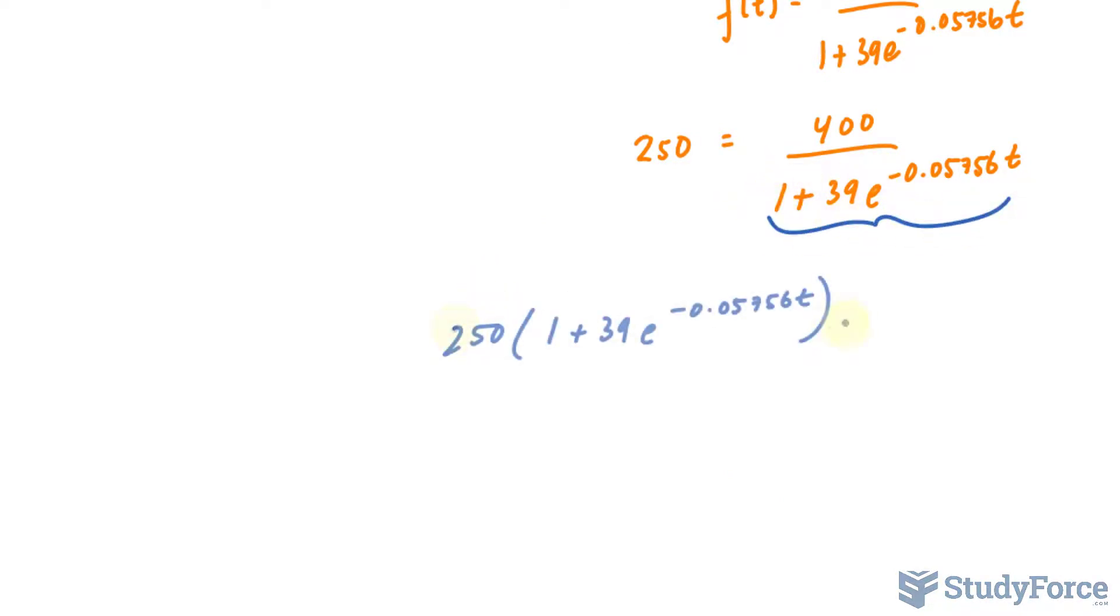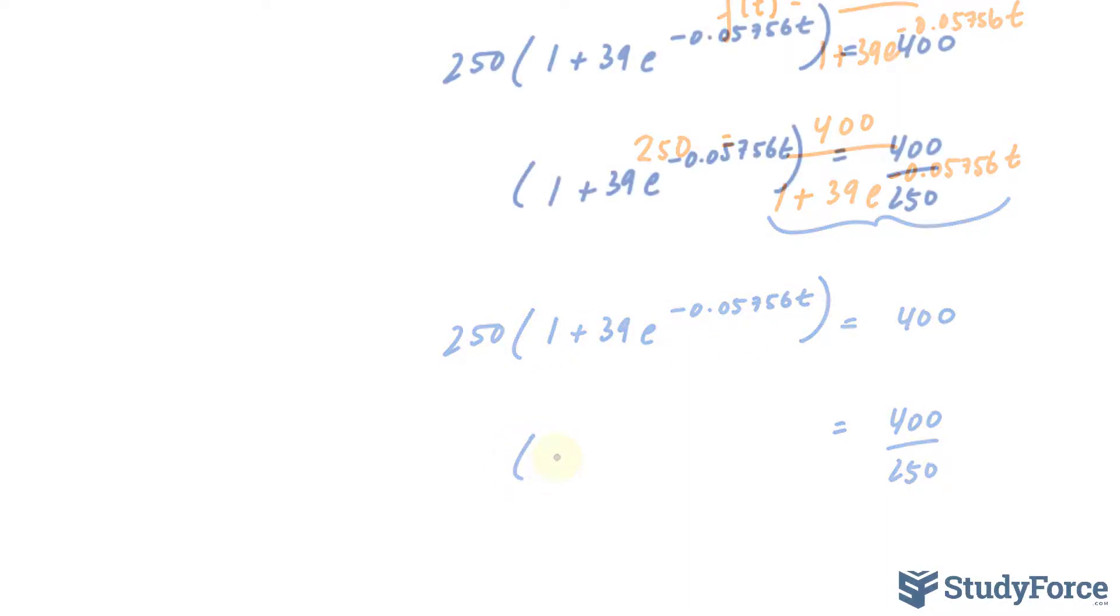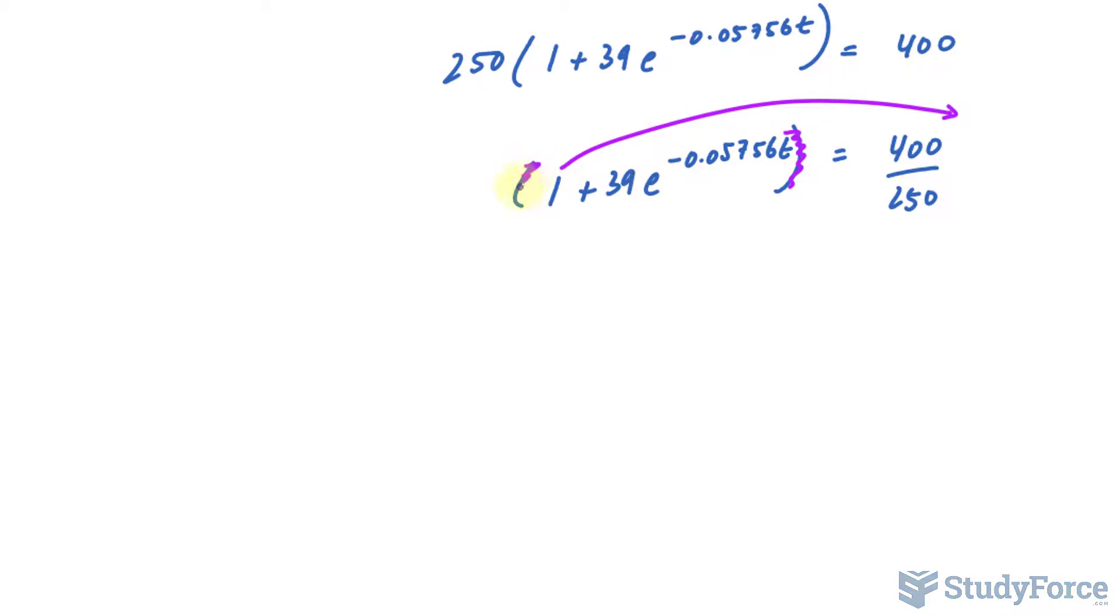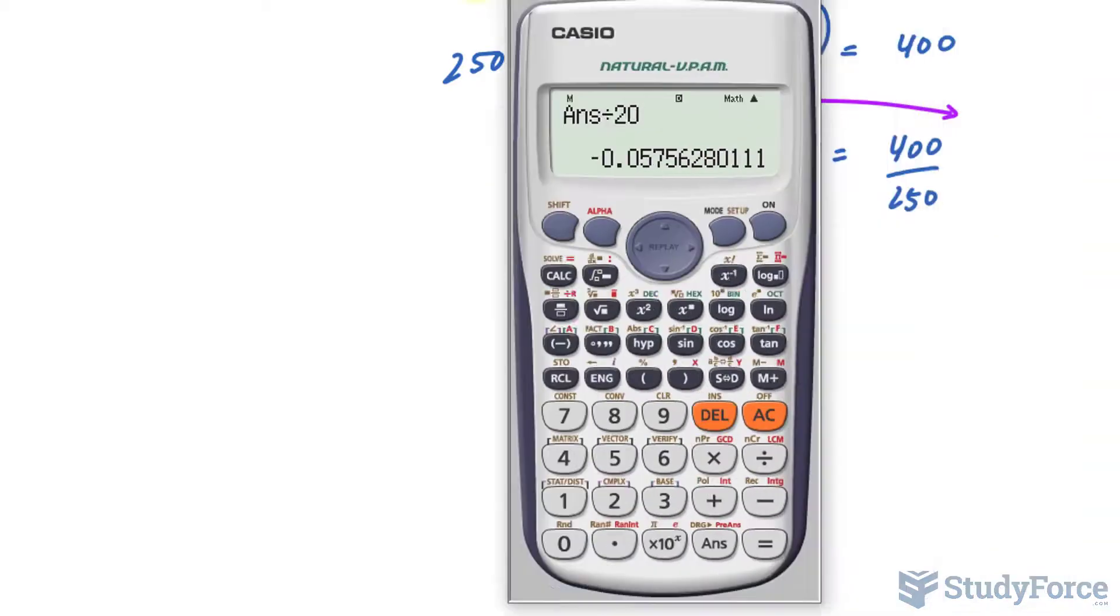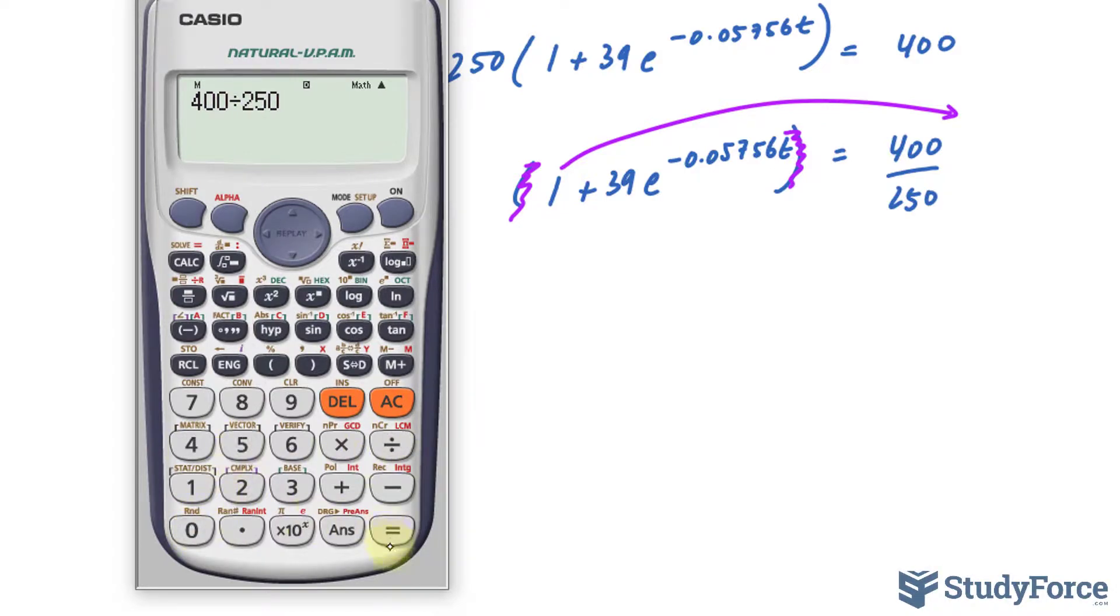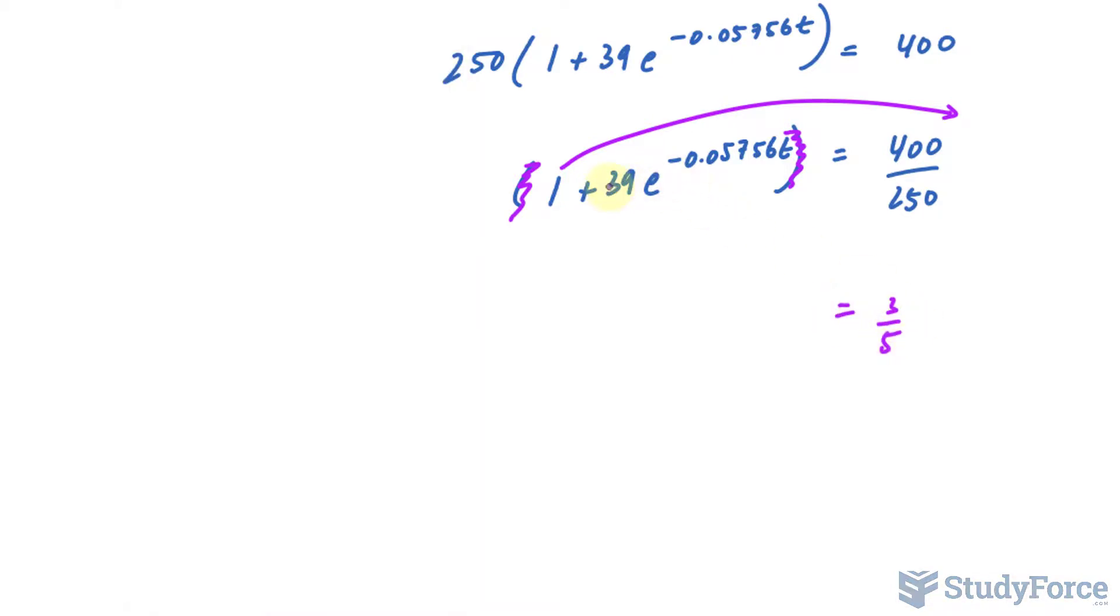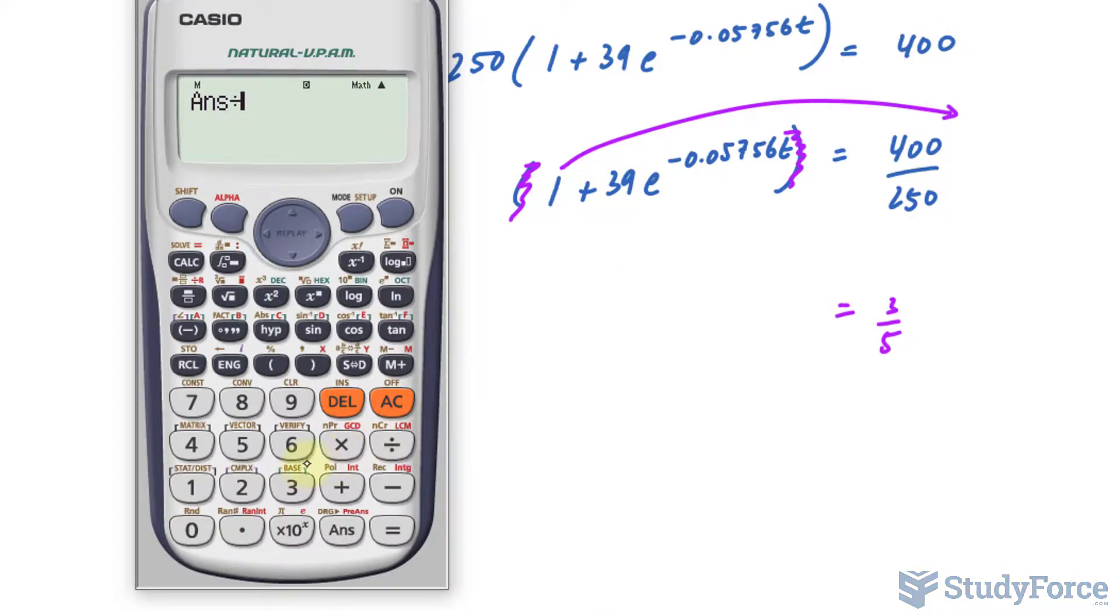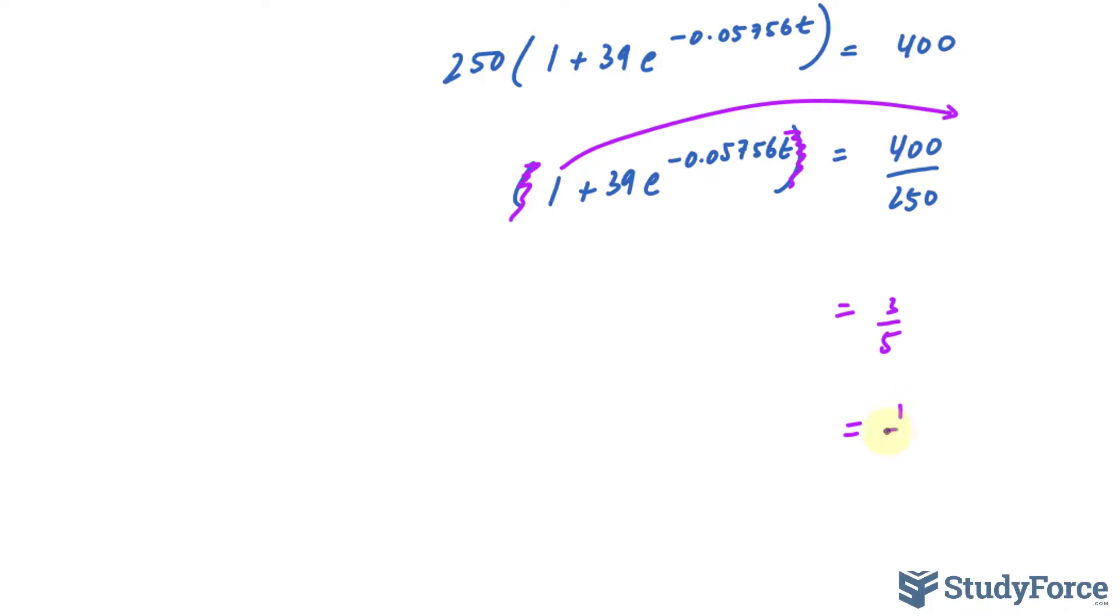Again, the math is the same. We multiply both sides by the denominator. And on the right side, we're left with 400. We divide both sides by 250. So I have 400 over 250. And that remains. Next, we move this one over. No need for the parentheses. And I get 400 over 250 minus 1. So that's the right side now. 3 over 5. Then I divide both sides by 39. Divide both sides by 39. And I get 1 over 65. So I no longer have this 1. I no longer have this 39. I have e to the power of negative 0.05756t.